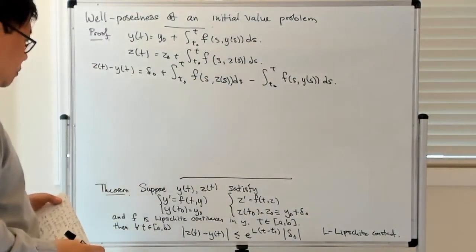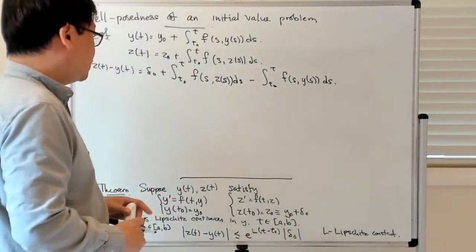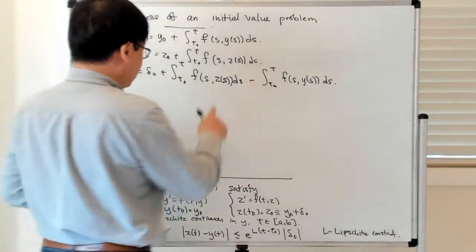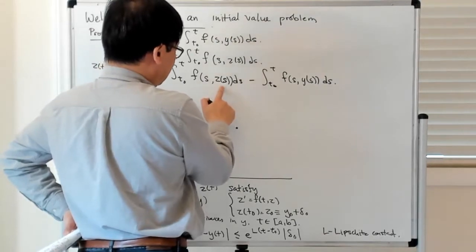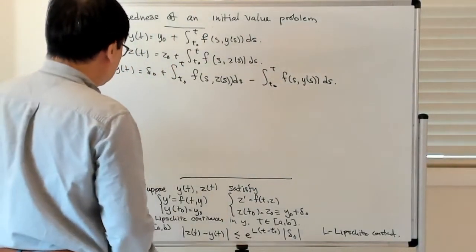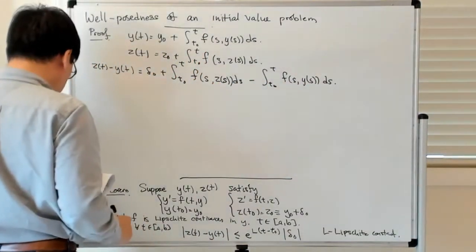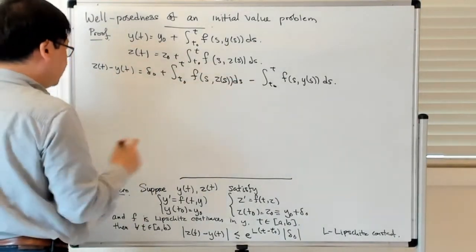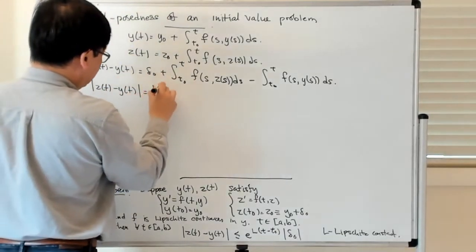The bound we get depends on the Lipschitz constant, which is suggestive that we should use Lipschitz continuity. We have an opportunity here because the integrand involves f(s, z(s)) and f(s, y(s)) — only the y-value is different. So we can use the Lipschitz continuity in the y-variable of f. To do that, we take absolute values: |z(t) − y(t)| equals the absolute value of that expression.